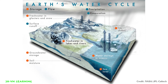When a cloud becomes full of liquid water, it falls from the sky as rain or snow, also known as precipitation. It can come down as rain, hail, snow, or other forms. Rain and snow then fill lakes and streams, and the process starts all over again. This is why we call it a cycle — it goes over and over.